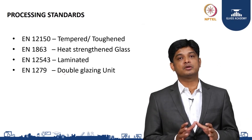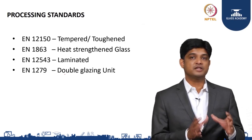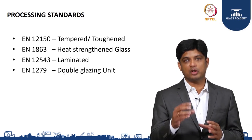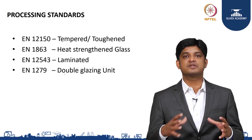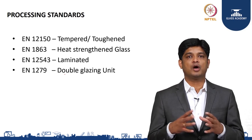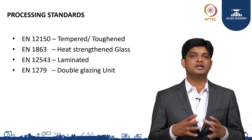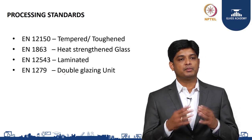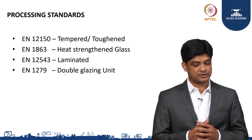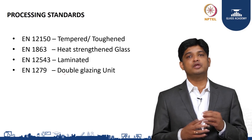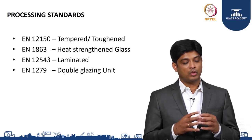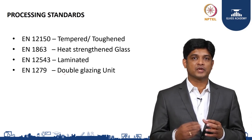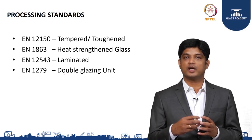In portion one, we covered the base float glass requirement, EN 572, which helps you understand the basic tolerances, dimensional requirements, and how to identify defects or spot faults based on classifications. The second portion covered coatings on glass — what kinds of tests it has to pass through, the purpose of each test, and why it is important.